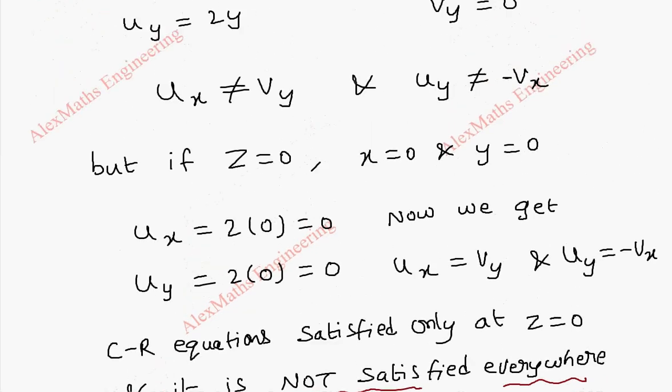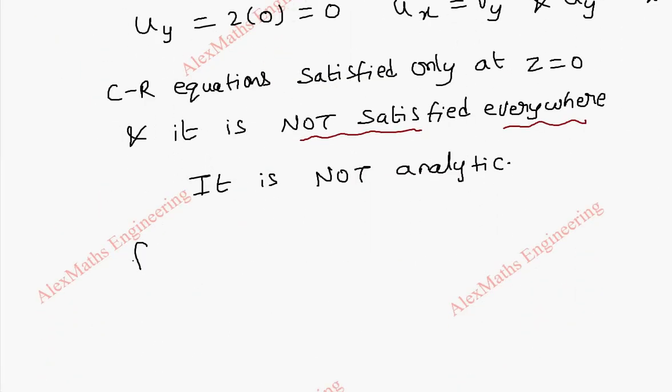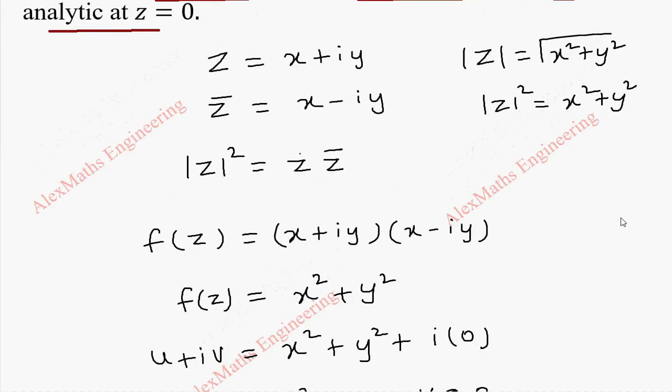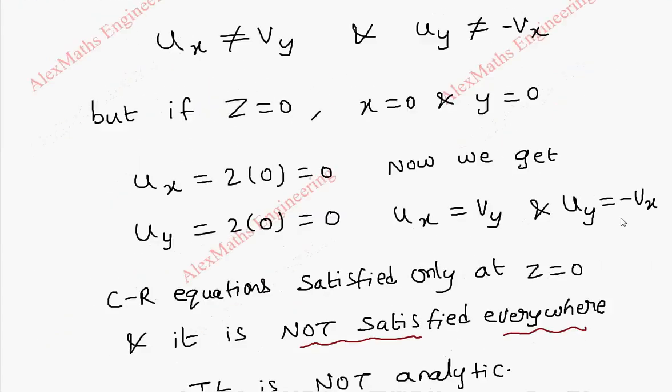But we find its derivative uₓ, uᵧ, vₓ, vᵧ all exist. So f(z) is differentiable at z = 0 and also uₓ, uᵧ, vₓ and vᵧ are continuous. So from all these statements we can say f(z) is differentiable at 0 but it is not analytic at z = 0.